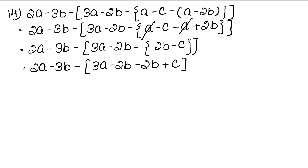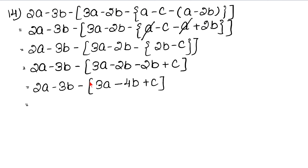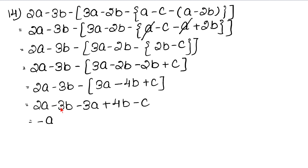Now let's open the curly bracket. The outside sign is minus, so sign changes inside. We get: 2A minus 3B minus 3A plus 4B plus C minus. Now, let's collect like terms. For A terms: 2A minus 3A gives minus A. For B terms: minus 3B plus 4B gives plus B. C has no like term, so the answer is minus A plus B minus C.